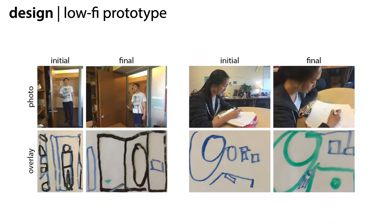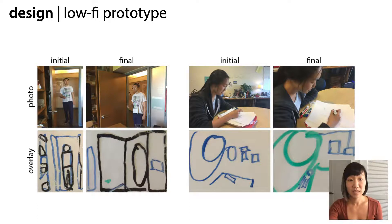Here you see the updated photos that the participants took. You can see that both participants adjusted the angle of the camera to better emphasize the focal interaction, and in doing so removed a lot of the office clutter. Our lo-fi prototype showed promise as we saw many such cases where participants adjusted composition to remove clutter upon seeing the overlay.